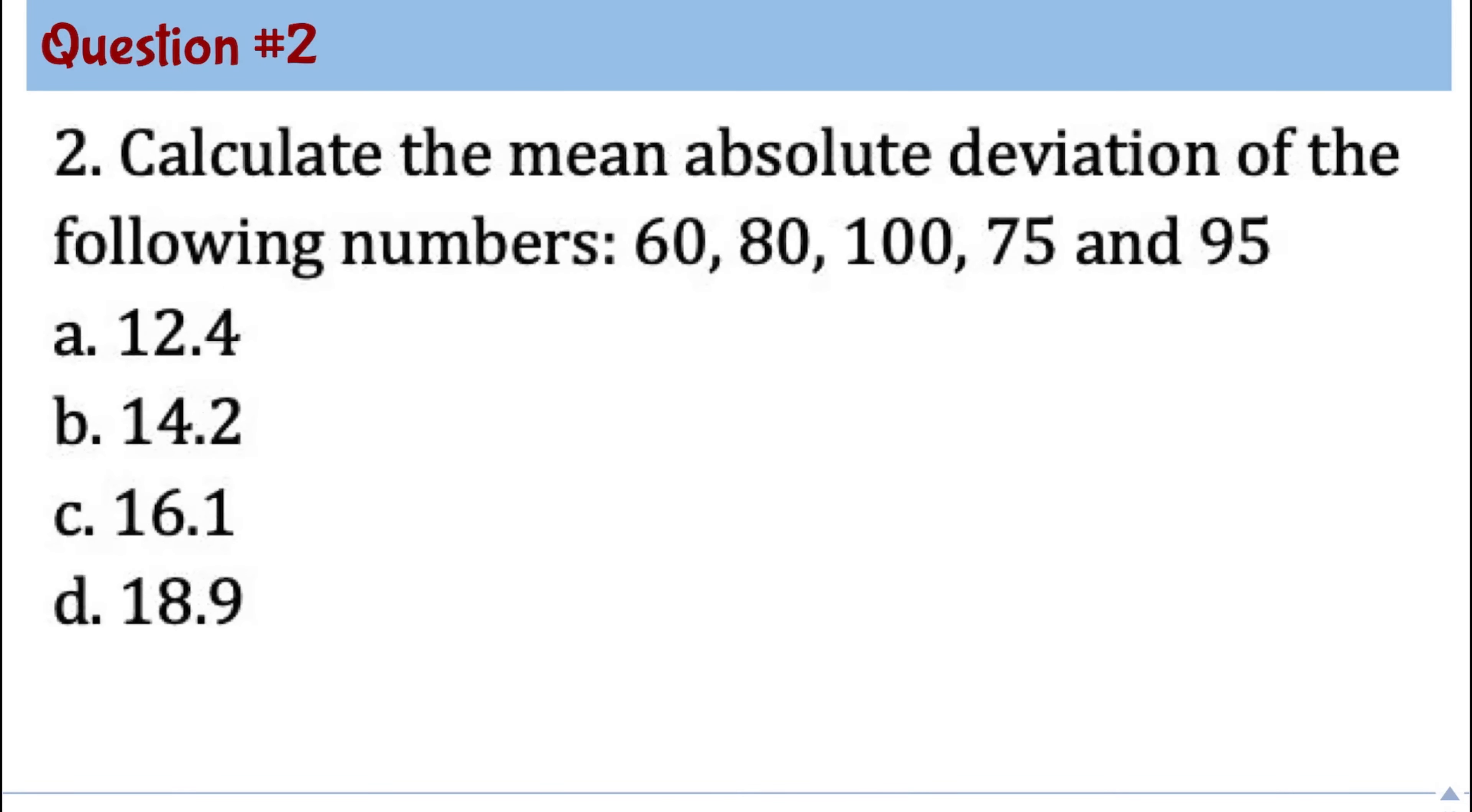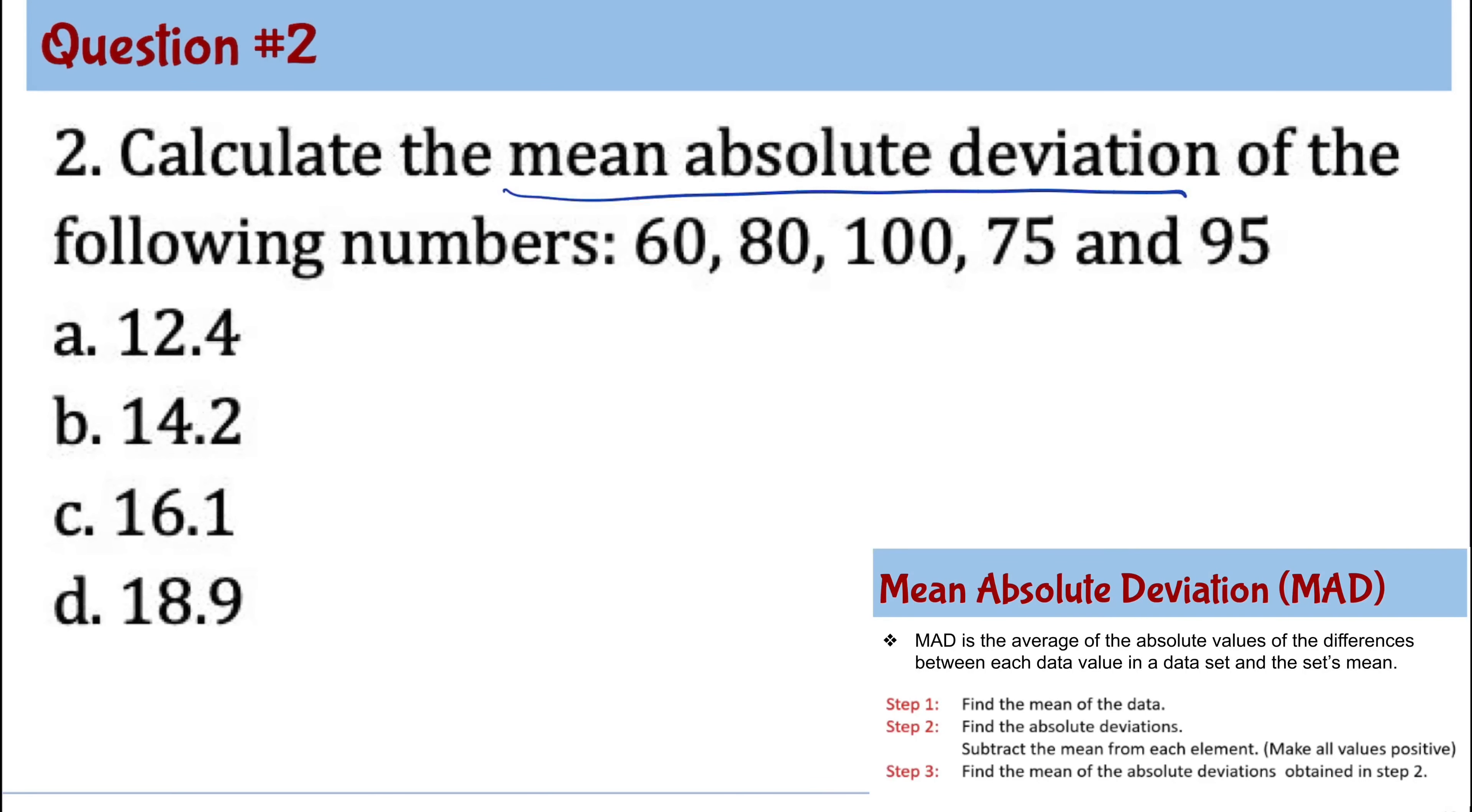Question number two. Calculate the mean absolute deviation of the following numbers 60, 80, 100, 75, and 95. So this type of question is either you know or you don't. So there's really no way to eliminate some of the choices. When we say mean absolute deviation, it involves multiple steps.